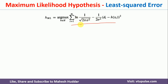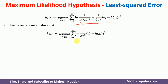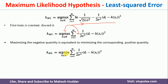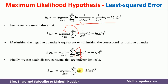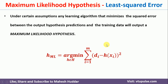Now, the constant term can be removed. Taking the minus outside, ARG max becomes ARG min. Then the remaining constant term is also removed, and we get the final result: the maximum likelihood hypothesis is the one which has the minimum squared error between the target and the calculated hypothesis. So the hypothesis with the minimum squared difference between the target and the hypothesis is the maximum likelihood hypothesis, under the assumption that the data is distributed normally. This is how the final HML equation looks.